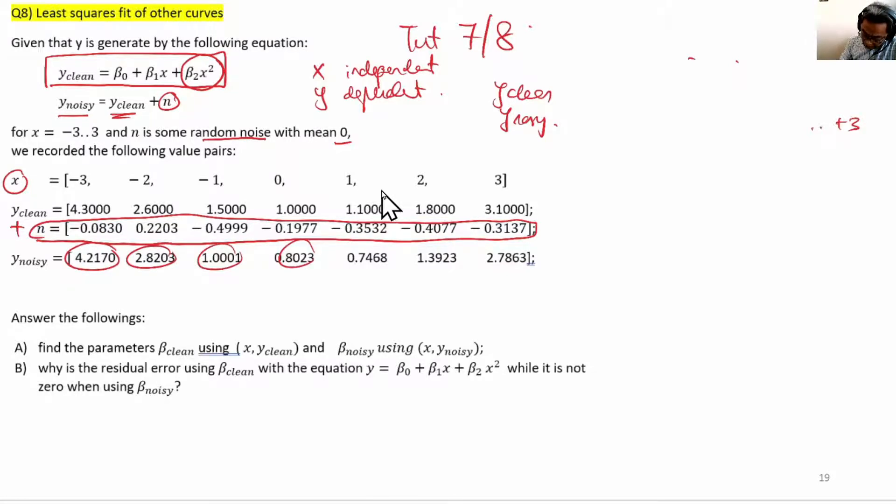How to get y_noisy is simply adding the y_clean value plus the noise value. In this case, 1 minus 0.1977 gives us 0.8023. So now we know how to get x, y_clean, n, and y_noisy.